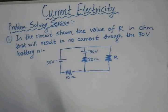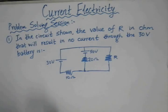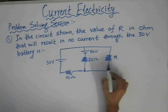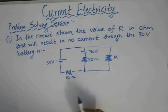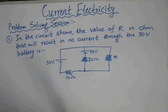In this session, we will be solving problems based on the concepts that we have already seen in this chapter. This is the first example given to us. In this circuit shown, the value of R in Ohm that will result in no current through the 30V battery is to be determined.